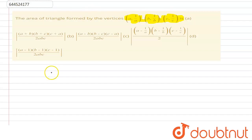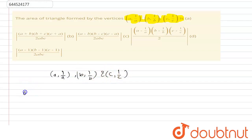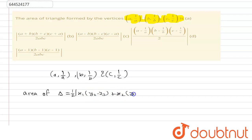So we have three vertices: (a, 1/a), (b, 1/b), and (c, 1/c). We know that the area of a triangle equals the modulus of half times [x1(y2 − y3) + x2(y3 − y1) + x3(y1 − y2)].